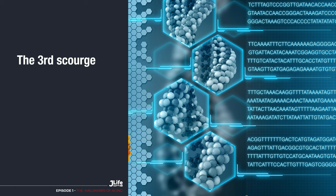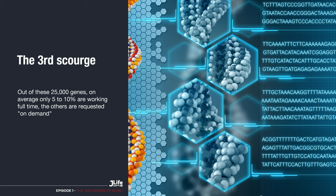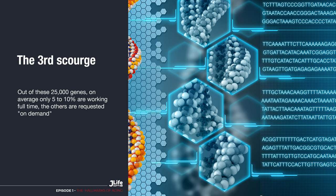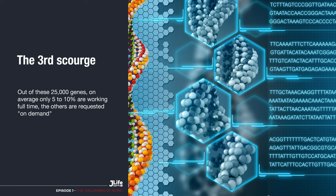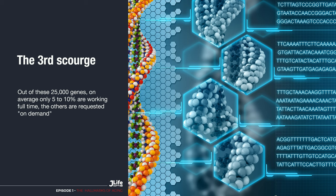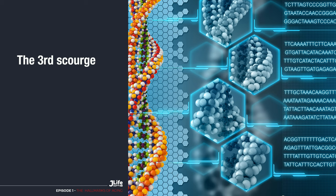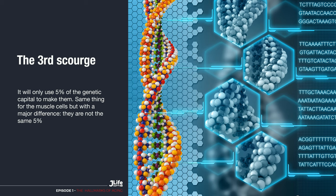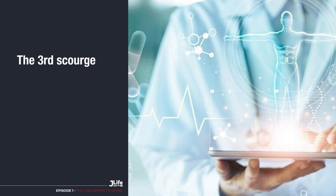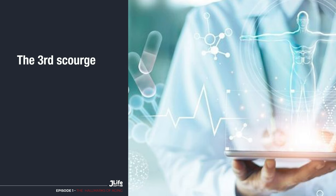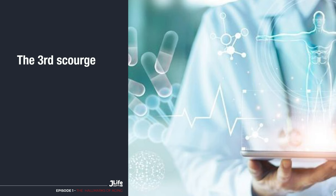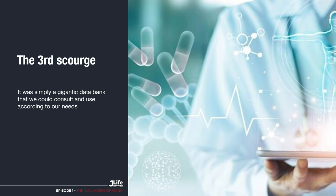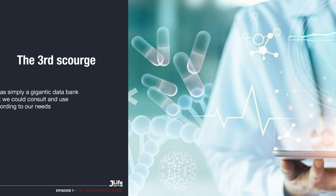As you know, we have between 20,000 and 30,000 genes located in each DNA. But what you may not know is that out of these 25,000 genes on average, only 5 to 10% are working full time. The others are requested on demand. For example, if your body needs to make skin cells, it will only use 5% of the genetic capital to make them — and not the same 5% used for muscle cells. So researchers found that our genetic capital, which seems to be the master of our destiny, was not at all the master. It was simply a gigantic data bank that we could consult and use according to our needs. The dogma of all genetics has just fallen.